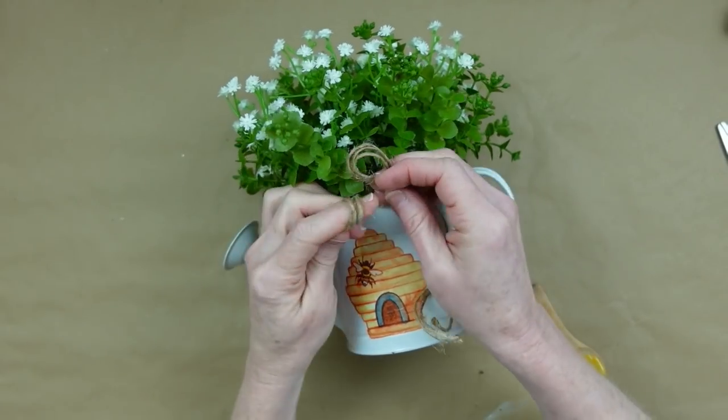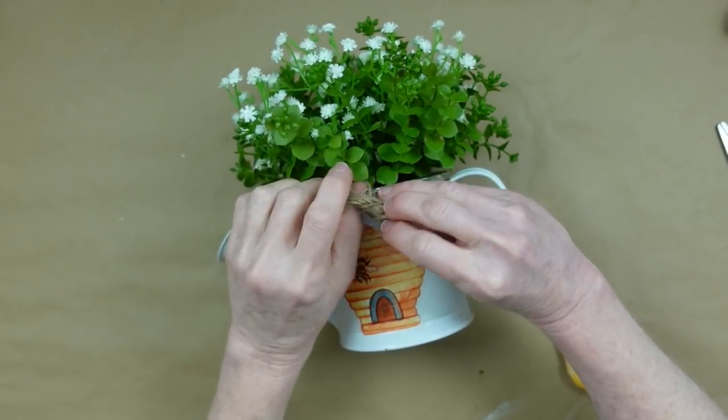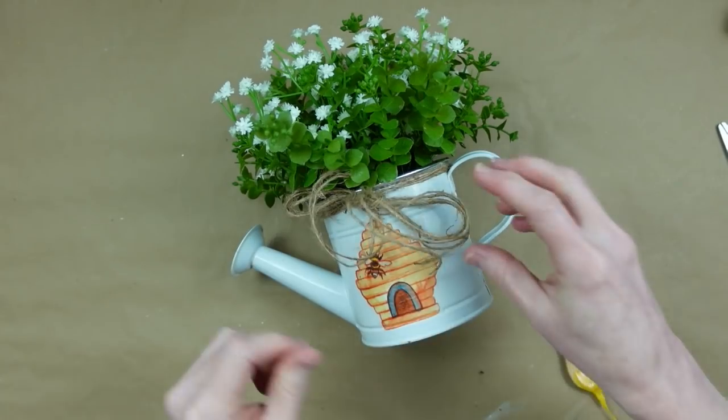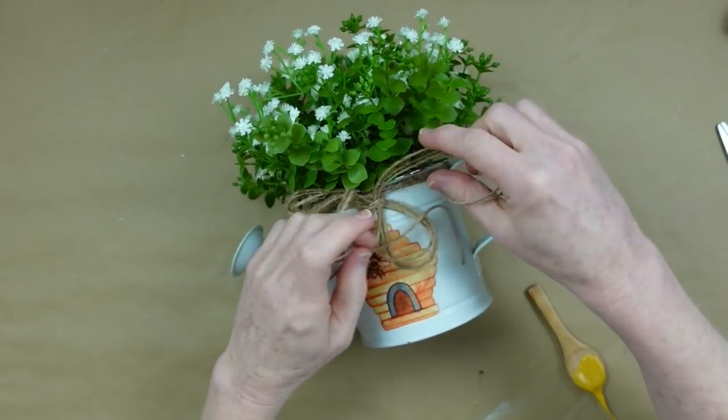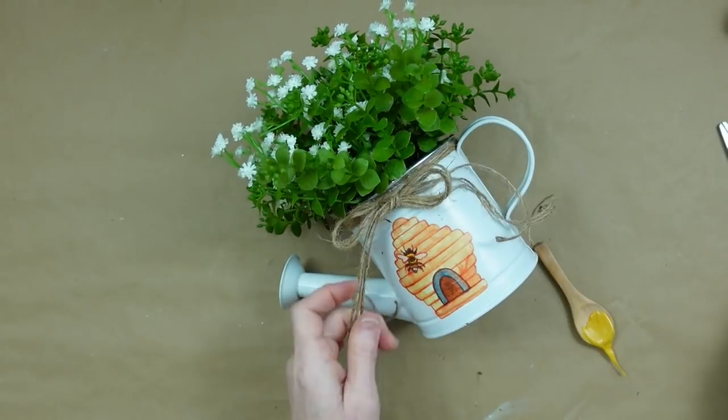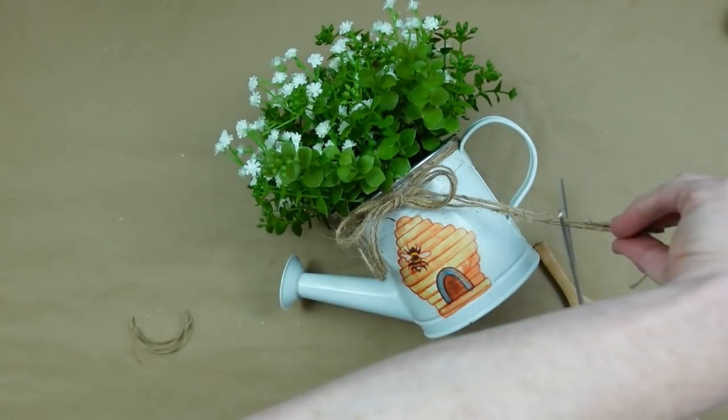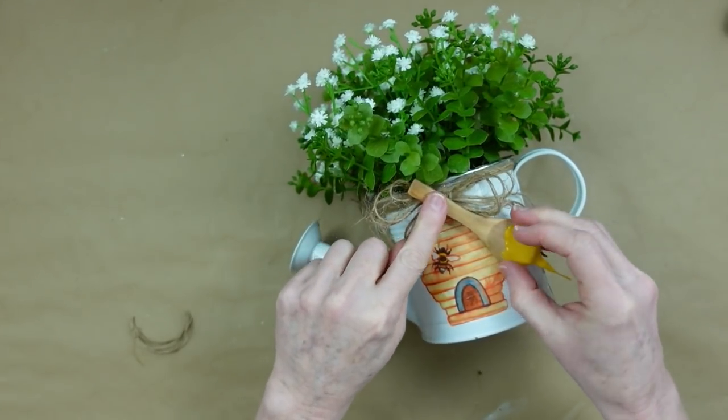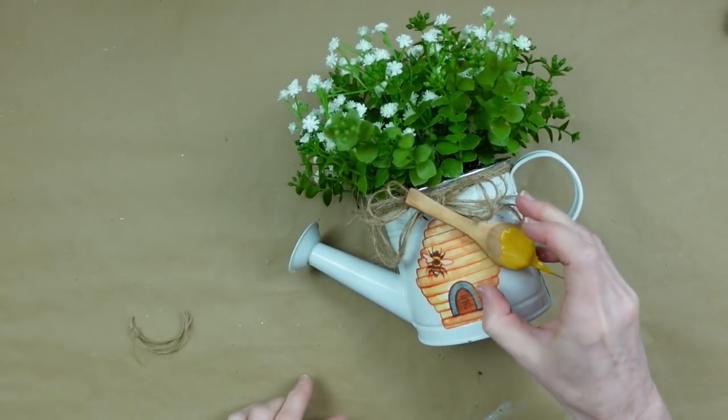Especially when you have those cans that you get from Dollar Tree, those little planters that are silver with the rope on them, they taper downward. So if you tie anything around the top, it's going to fall unless you add a little glue. So just keep that in mind. I'm just tying a very simple bow here and I'm going to trim off my ends for a little extra embellishment on the top. And now I'm going to add my other honey spoon.